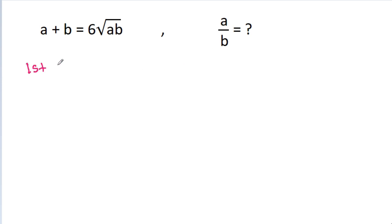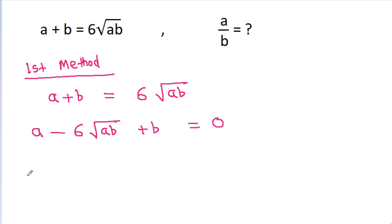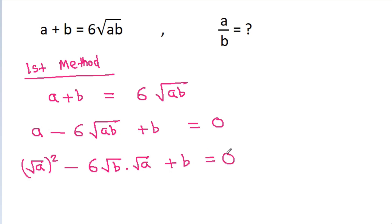In the first method, we have a plus b equals 6 times the square root of ab. Rearranging, a minus 6 times the square root of ab minus b equals 0. This can be written as root a squared minus 6 times root a times root b minus root b squared equals 0, which is a quadratic equation in root a.